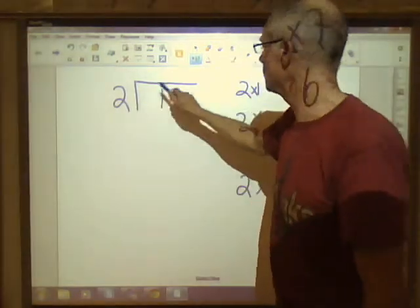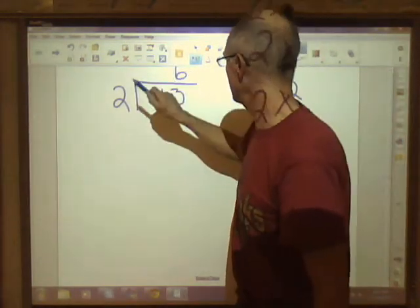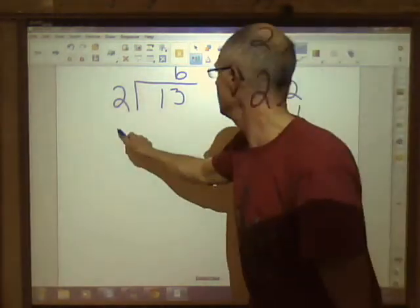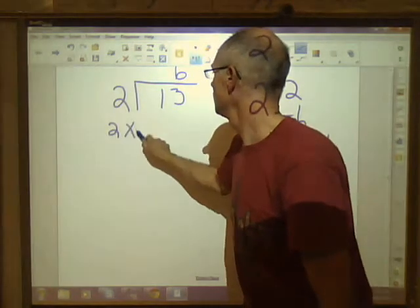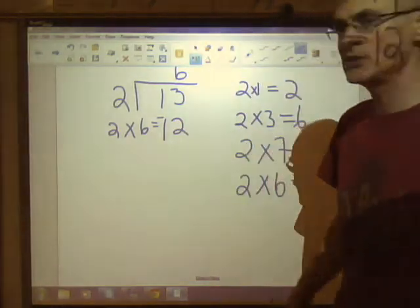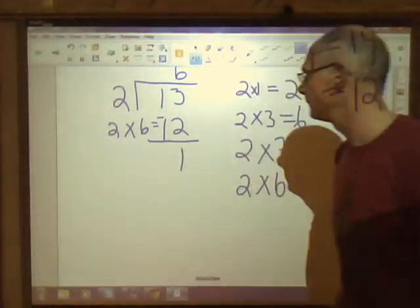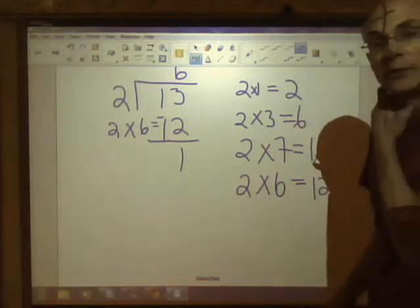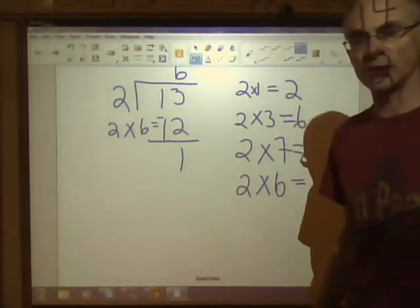So 2 goes into 13 six times, and we've actually used $12 of the $13. We have $1 left. That's exactly how you do it. Nice and straightforward and simple.